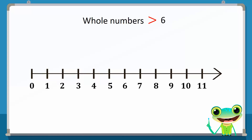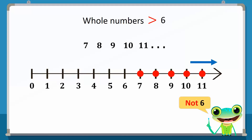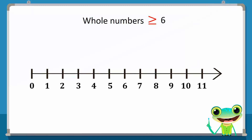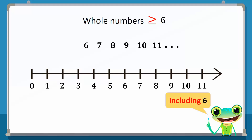These numbers are 7, 8, 9, 10, 11 and so on. The selected numbers are highlighted through dots, and we use an arrow in the top right-hand corner of the number line to indicate that there are infinite whole numbers greater than 6. To represent whole numbers greater than or equal to 6, we include all whole numbers greater than 6 as well as the number 6 itself: 6, 7, 8, 9, 10, 11 and so on. We highlight the required numbers using dots, and again use an arrow to indicate that the numbers continue till infinity.